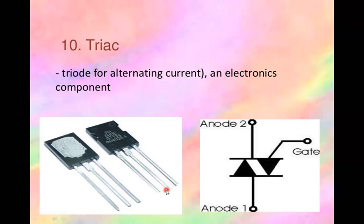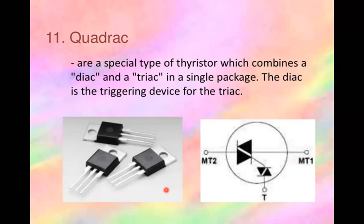Being solid-state devices, thyristors can be used to control lamps, motors, or heaters. A quadrac is a special type of thyristor that combines a DIAC and a TRIAC in a single package — the DIAC acts as the triggering device for the TRIAC.